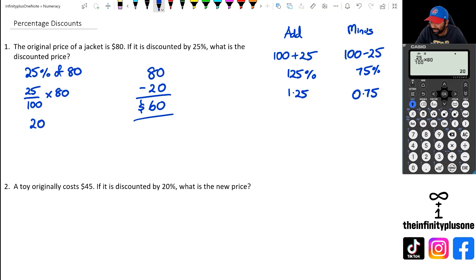So if I had actually done 80 multiplied by 0.75, what that's already doing is it's actually removing the 25%. And as you can see, the answer ends up being 60. So that's a quicker way of doing this as well when it comes to doing percentage discounts.